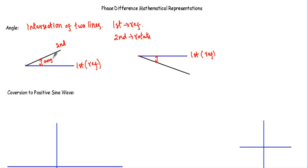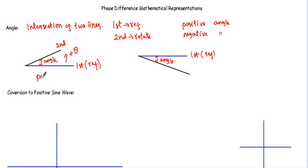There are two types of angle: one is positive angle and another is negative angle. If I want to go from the reference axis to the second straight line and I have to rotate in counter-clockwise direction, that angle will be positive. If I have to rotate in clockwise direction, that angle will be negative.